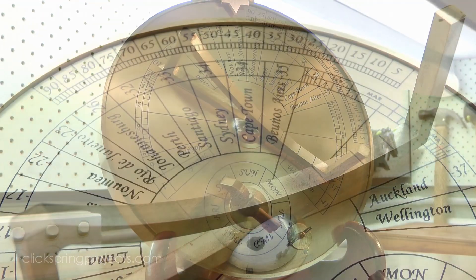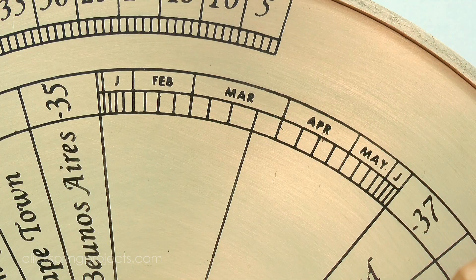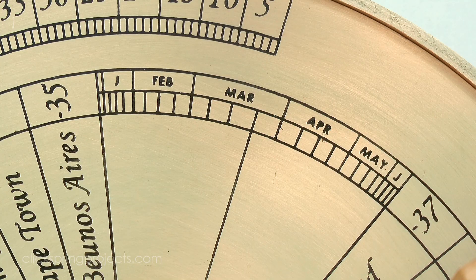On the other side of the device is the sundial display, with the gnomon, latitude and seasonal correction markings, and a circular table of city latitudes.